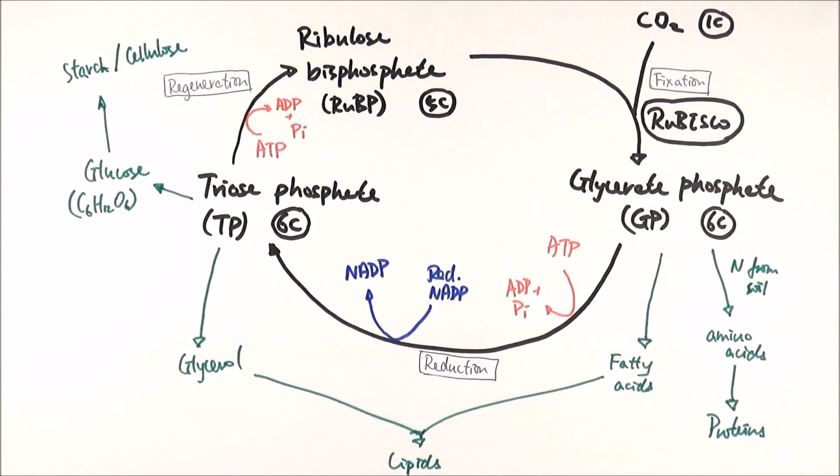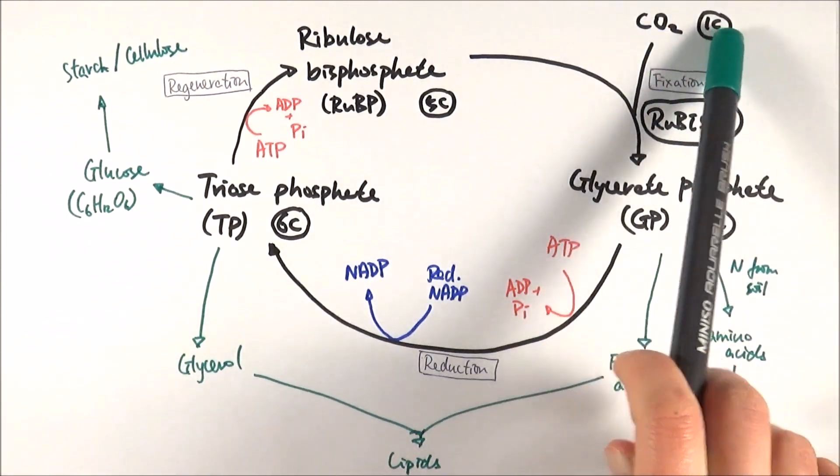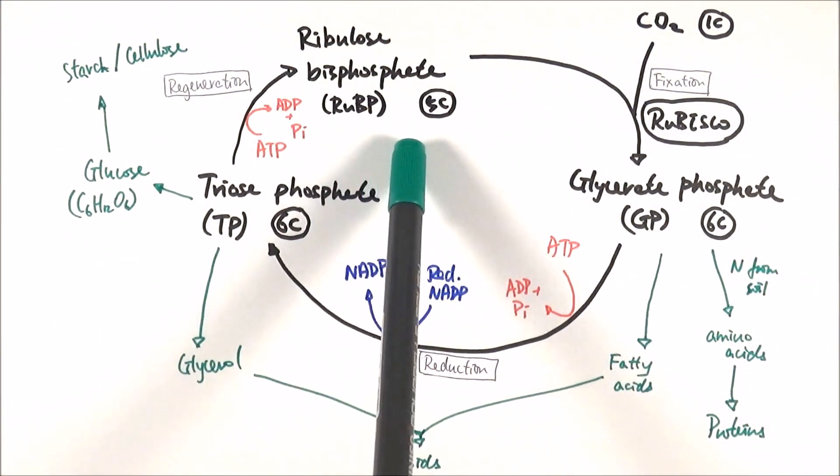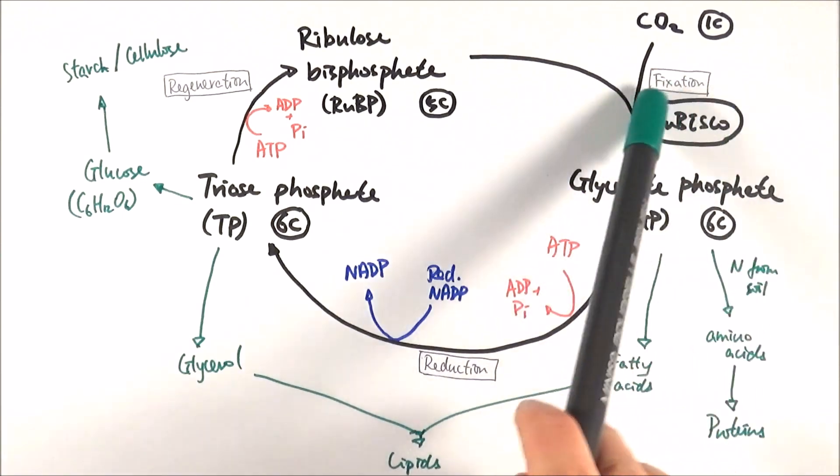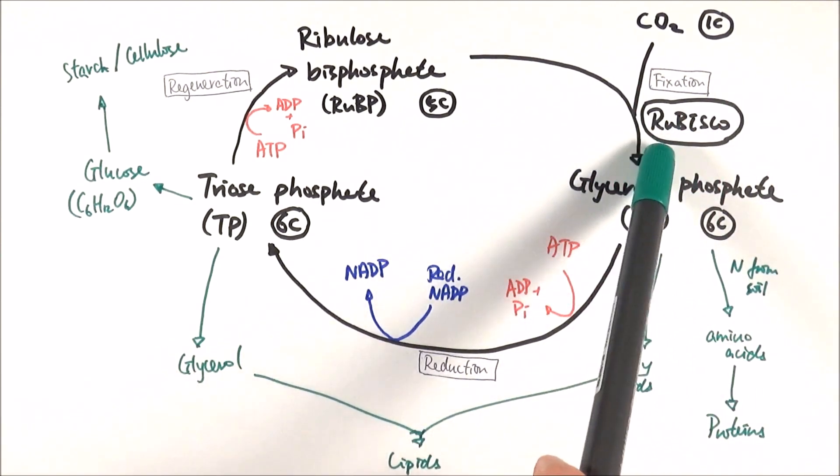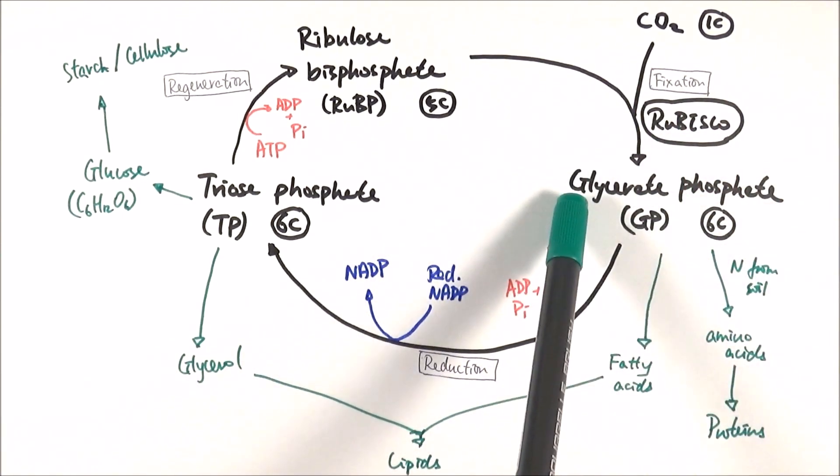And there you have it. This is the whole Calvin cycle. Very quickly, in the beginning, we've got carbon dioxide combines with ribulose bisphosphate in fixation under the catalysis of RuBisCo to make glycerate phosphate, GP.